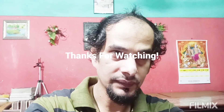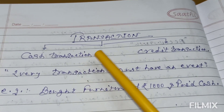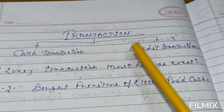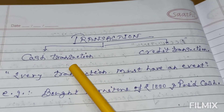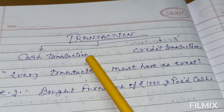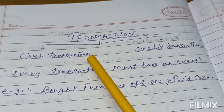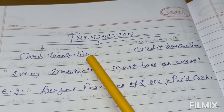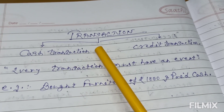Regarding the word 'transaction' — in accountancy, only those transactions are recorded which have a monetary value. There are two types of transactions: cash transactions and credit transactions. Whenever a cash transaction takes place, money is directly involved — you are purchasing something and paying cash, or selling something and receiving cash.